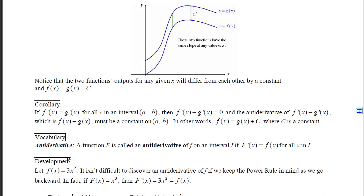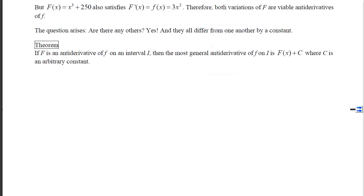A function capital F is called an antiderivative of little f on an interval if capital F's derivative equals little f for all x's in that interval. For example, if f of x equals 3x squared, the antiderivative is x cubed, since differentiating gives 3x squared. But capital F of x equals x cubed plus 250 also satisfies the condition. Both are viable antiderivatives, and there are an uncountable number of them — they all differ from each other by a constant.